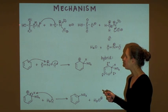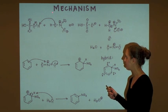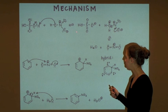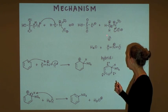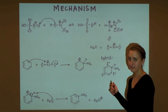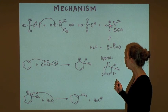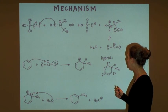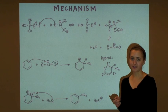In step one, sulfuric acid protonates nitric acid to produce hydrogen sulfate and protonated nitric acid. This protonated nitric acid undergoes dissociation to produce water and the nitronium ion, which is the key electrophile.